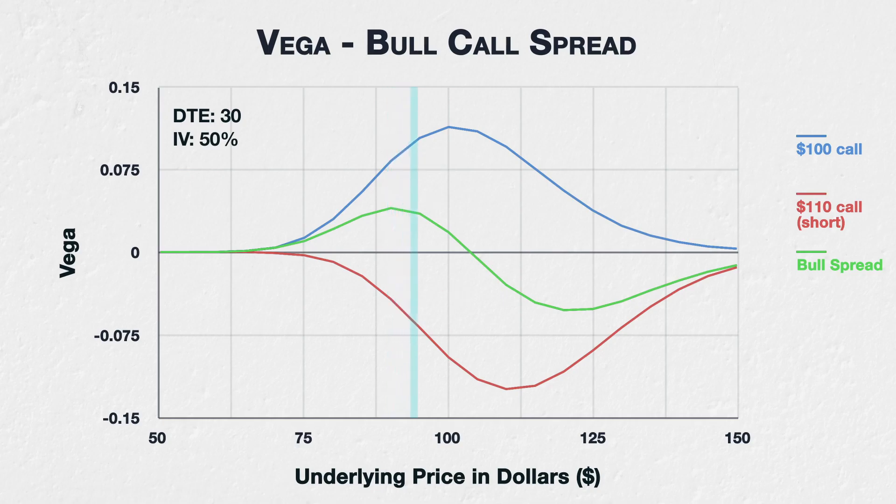The vega is positive, meaning if the underlying price is sitting at $90, the spread will currently gain value if implied volatility increases. Once we get to an underlying price of $100, the $100 call is at the money, while the $110 call is still out of the money. The vega of the $100 call peaks here, while the $110 call is still gaining more vega. As we are short the $110 strike, this means although the vega of the spread is still positive, this value is now decreasing.